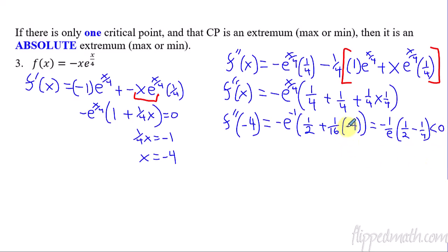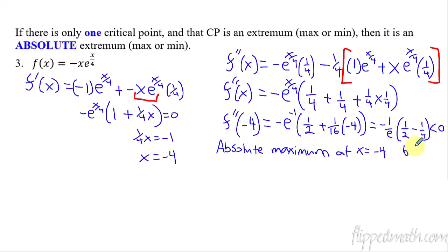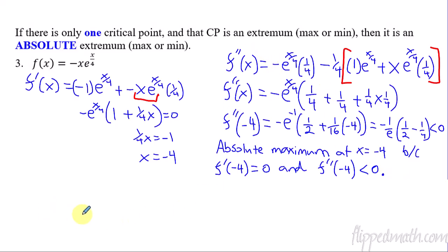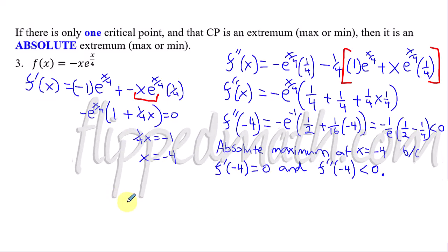So the second derivative is negative — the function is concave down — and therefore it's a maximum. But we also know it's absolute: it is an absolute maximum at x equals negative four. We know it's absolute because we only have one critical point. If it's concave down and there are no other critical points, then this is the highest it's going to be. The justification: the first derivative evaluated at negative four equals zero, and the second derivative evaluated at negative four is less than zero. That completes our second derivative test. Rock that mastery check and I'll see you in the next lesson.